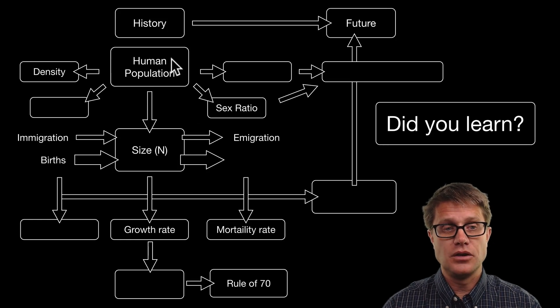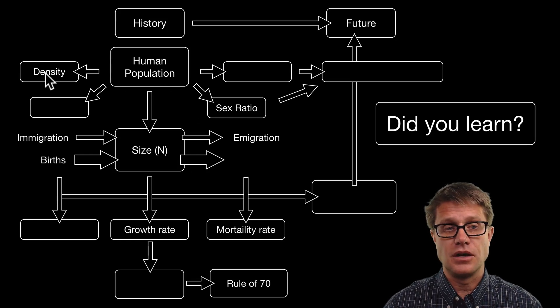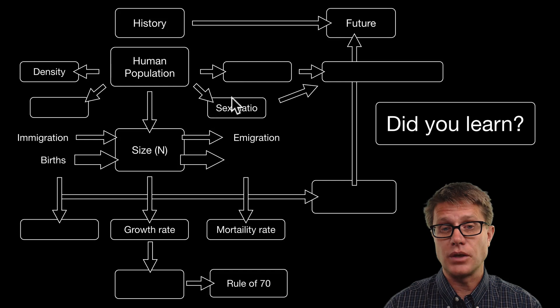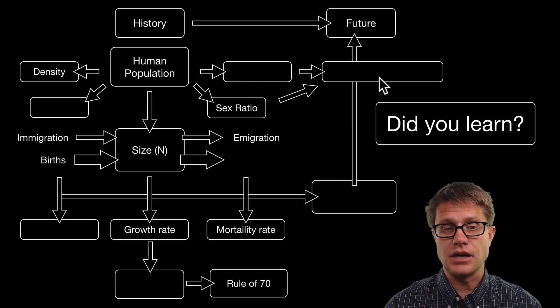And so did you learn the following? That the human population characteristics are density, distribution, sex ratio, age structure, which we can see in an age structure diagram.